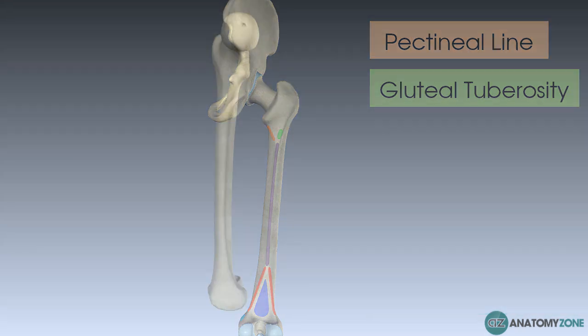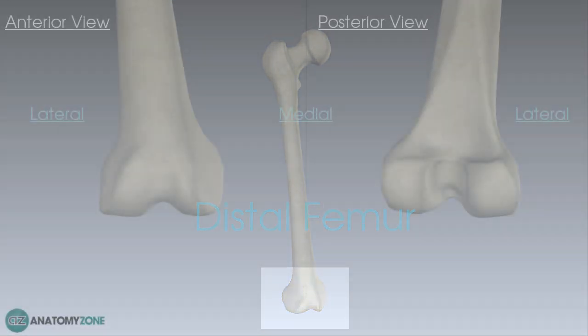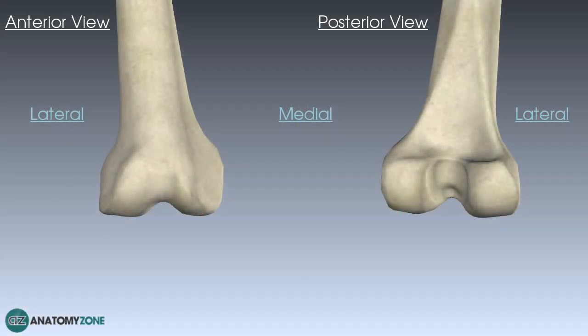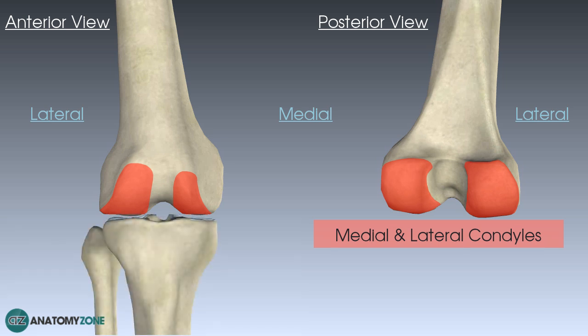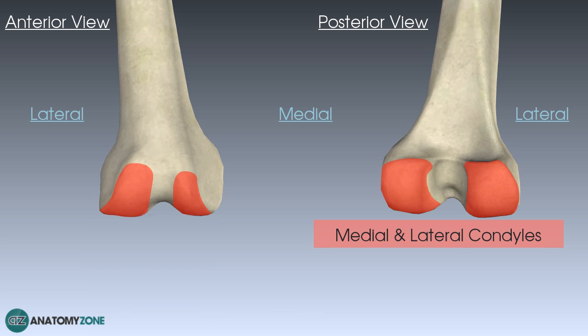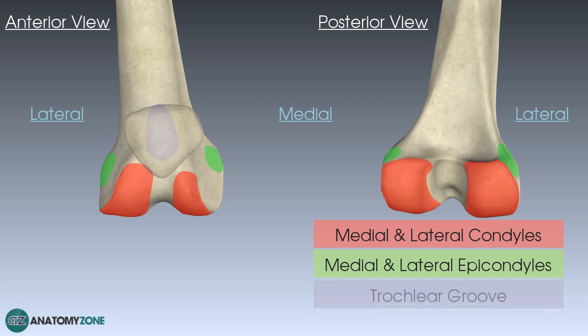Now let's go through the distal femoral features. Firstly, you have two condyles — the term condyle means knuckle — a lateral one and a medial one, covered in hyaline cartilage, which sit on top of your tibia to form the tibiofemoral joint. Slightly above these are two smaller knuckles called the medial and lateral epicondyles. On the anterior aspect there is a groove the patella runs in, called the trochlear groove — also known as the trochlear notch, patellar groove, or femoral sulcus, but primarily referred to now as the trochlear groove.